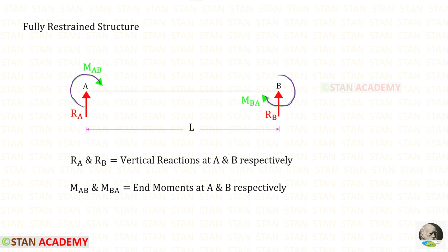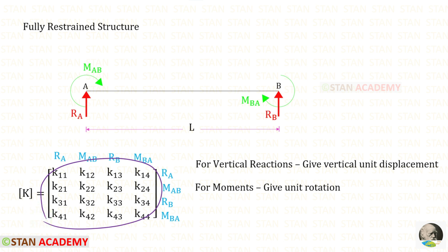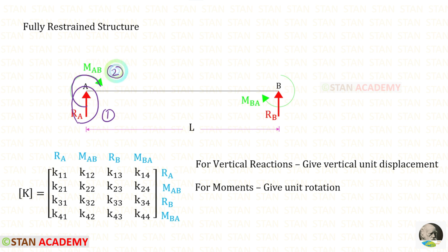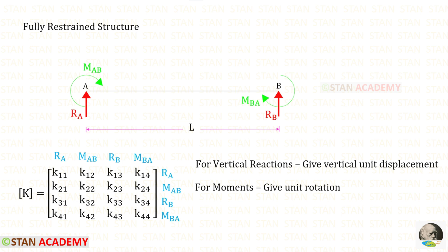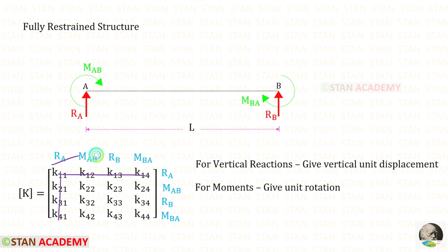This is the stiffness matrix we are going to derive. There are four unknowns: R_A as number 1, MAB as number 2, R_B as number 3, and MBA as number 4. The first row and column goes to R_A, the second row and column goes to MAB, the third row and column goes to R_B, and the fourth row and column goes to MBA. For vertical reactions we need to give vertical unit displacement. For moments we need to give unit rotation.